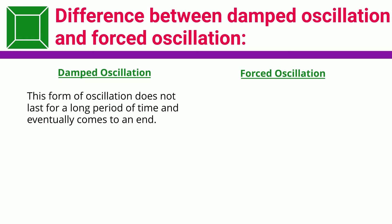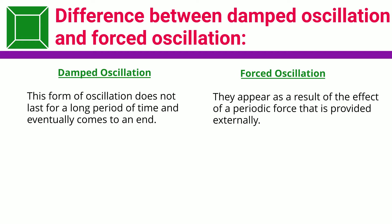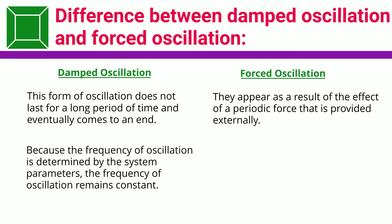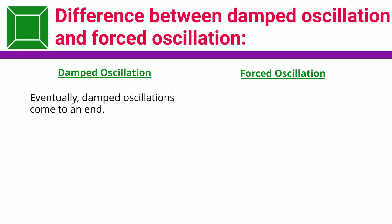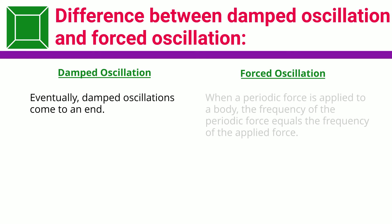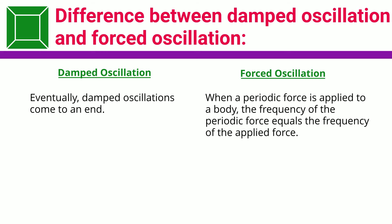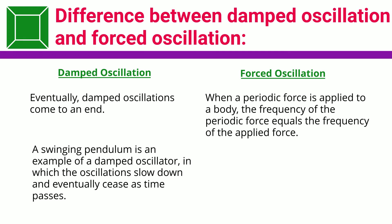Damped oscillation does not last for a long period of time and eventually comes to an end. Forced oscillations appear as a result of the effect of a periodic force that is provided externally. Because the frequency of oscillation is determined by the system parameters, the frequency of oscillation remains constant. As long as the body is subjected to an external force, forced oscillations will continue to occur. Eventually, damped oscillations come to an end. When a periodic force is applied to a body, the frequency of oscillation equals the frequency of the applied force.